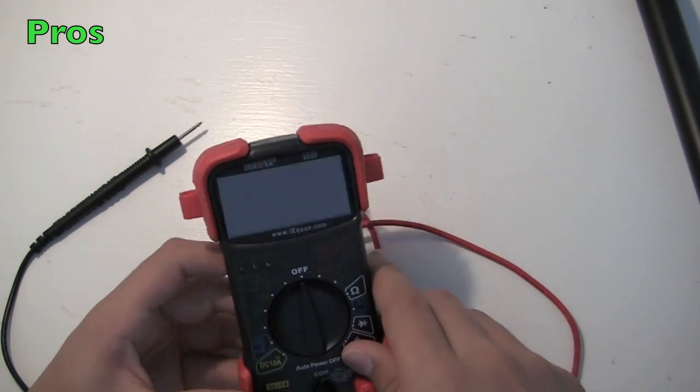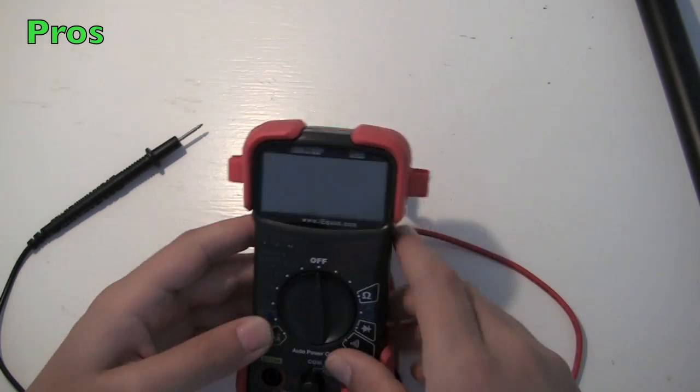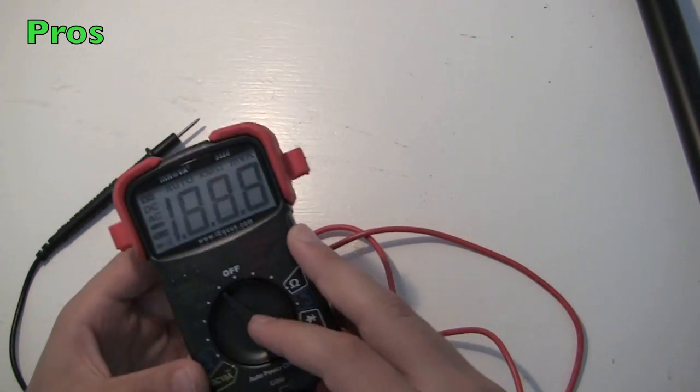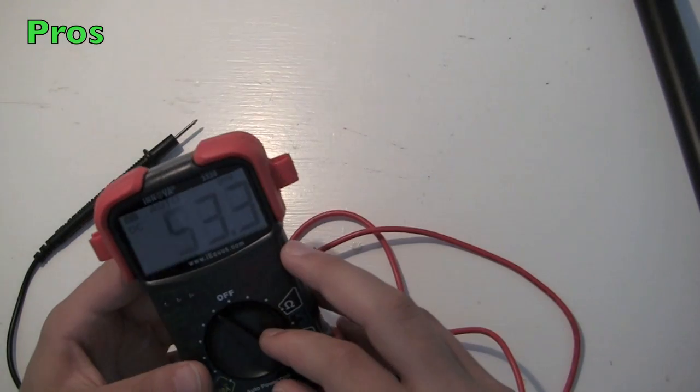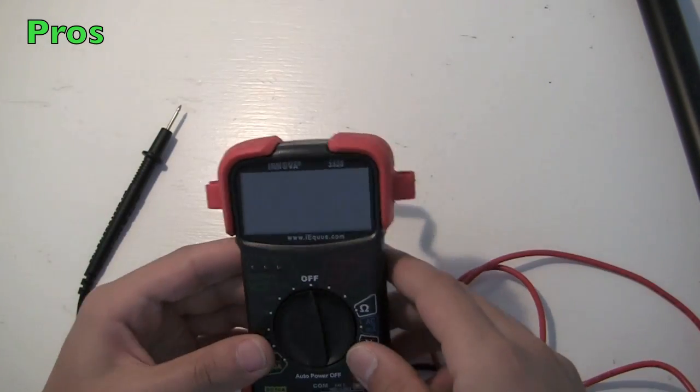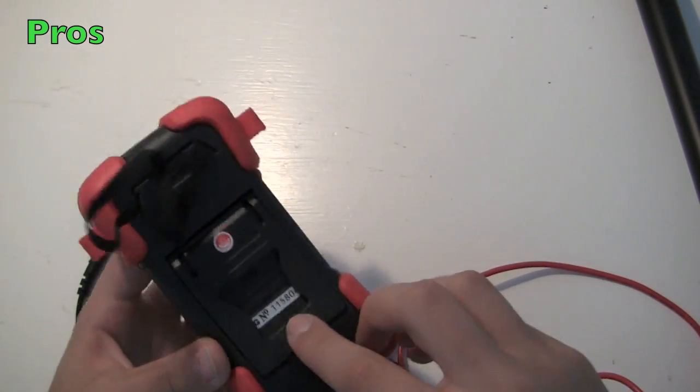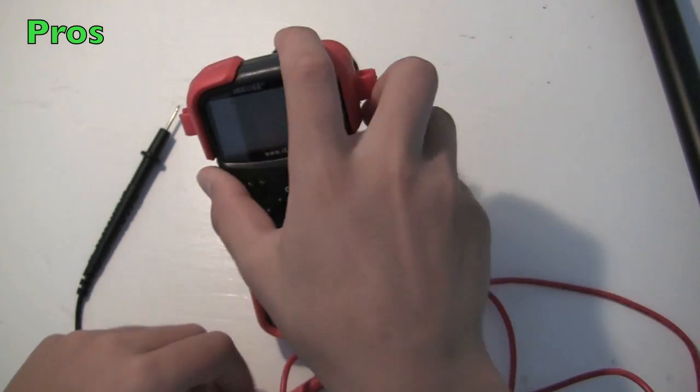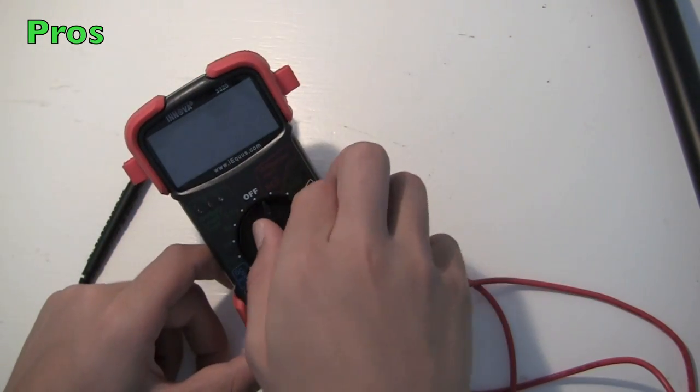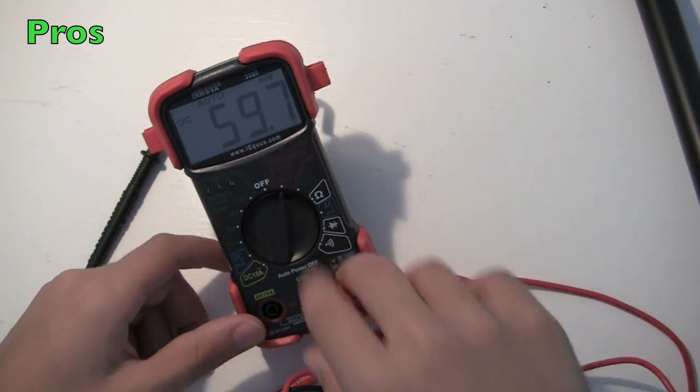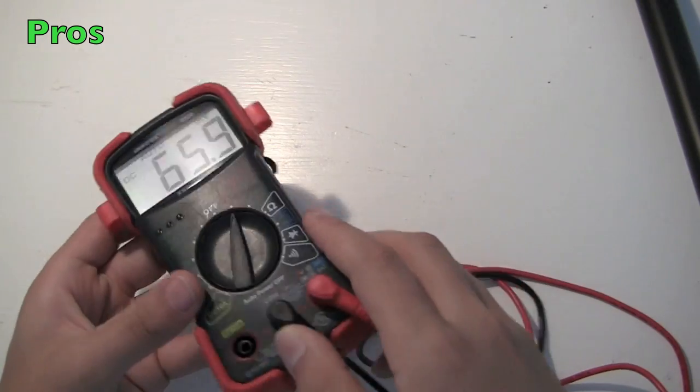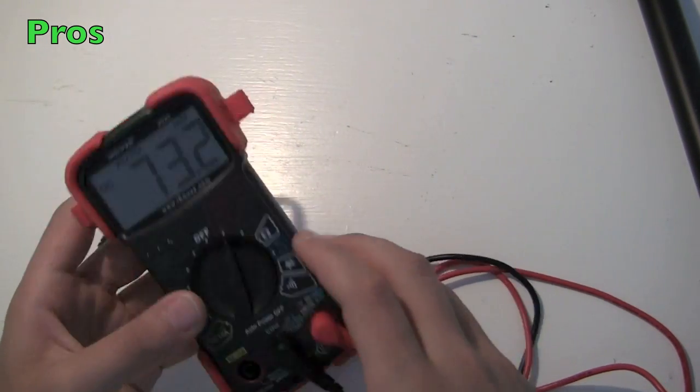Another advantage is the very large digital screen here, so you can easily see the numbers that you're measuring. Another advantage is that it has a stand on the back, so you can just set it up like that. And if you're working on something, it's easier to see the numbers because sometimes if you put it at an angle, you can't really see the numbers.